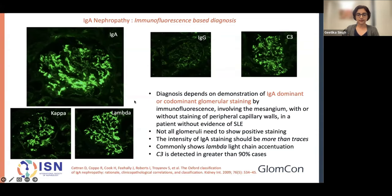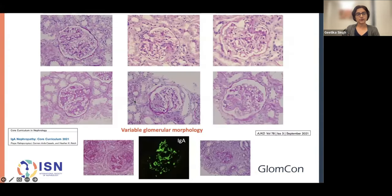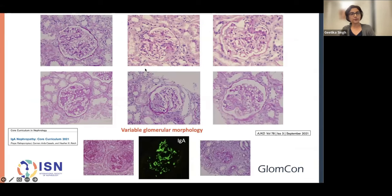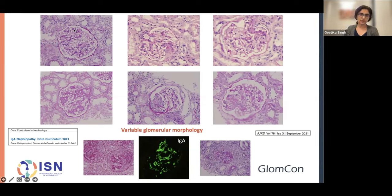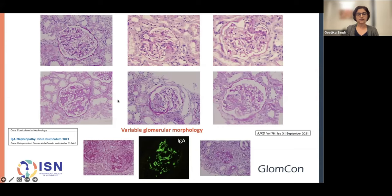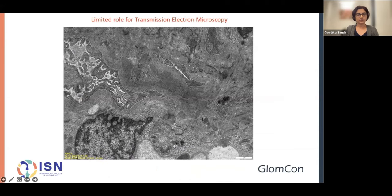In terms of histology, as covered in the core curriculum — with Carmen as part of it — we know that the pathology can be very variable. It can range from a minimal change histology to something which looks very dangerous, such as crescentic endocapillary proliferative disease. But the most common pattern of glomerular injury is mesangial proliferation.